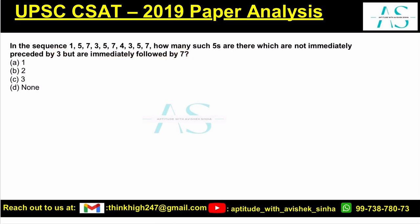That means we are looking out for fives which are immediately followed by 7 but which are not immediately preceded by 3. That means 3 must not be here but 7 must be there afterwards.